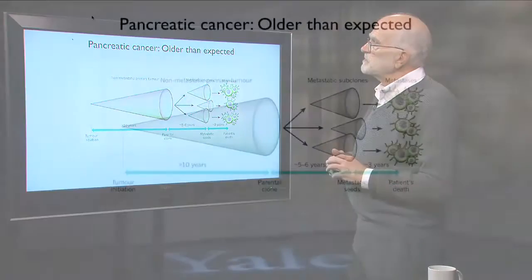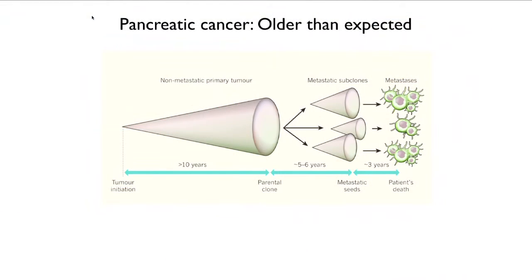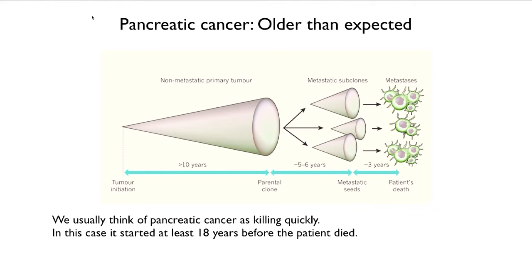So let's take a look first at pancreatic cancer. Now, pancreatic cancer is something that we usually think of as killing people pretty quickly. I had a friend in 1987 who got his diagnosis on the 1st of January and he was dead by Easter.